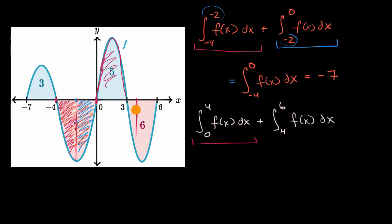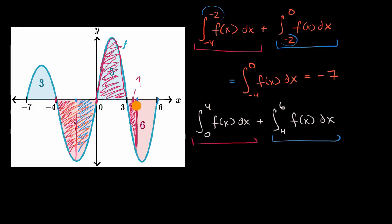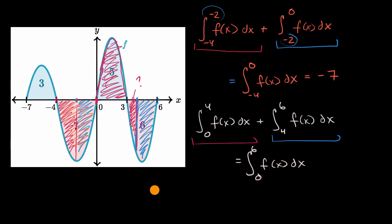But then we would need to subtract the area that's below our x-axis and above our curve — we don't know exactly what that part is on its own. But luckily, we need the sum of everything, plus the integral from four to six, which covers this next region. Once again, you can see this expression is equivalent to taking the definite integral all the way from zero to six of f of x dx, because our upper bound of the first integral is the lower bound of the second, so we can merge them.